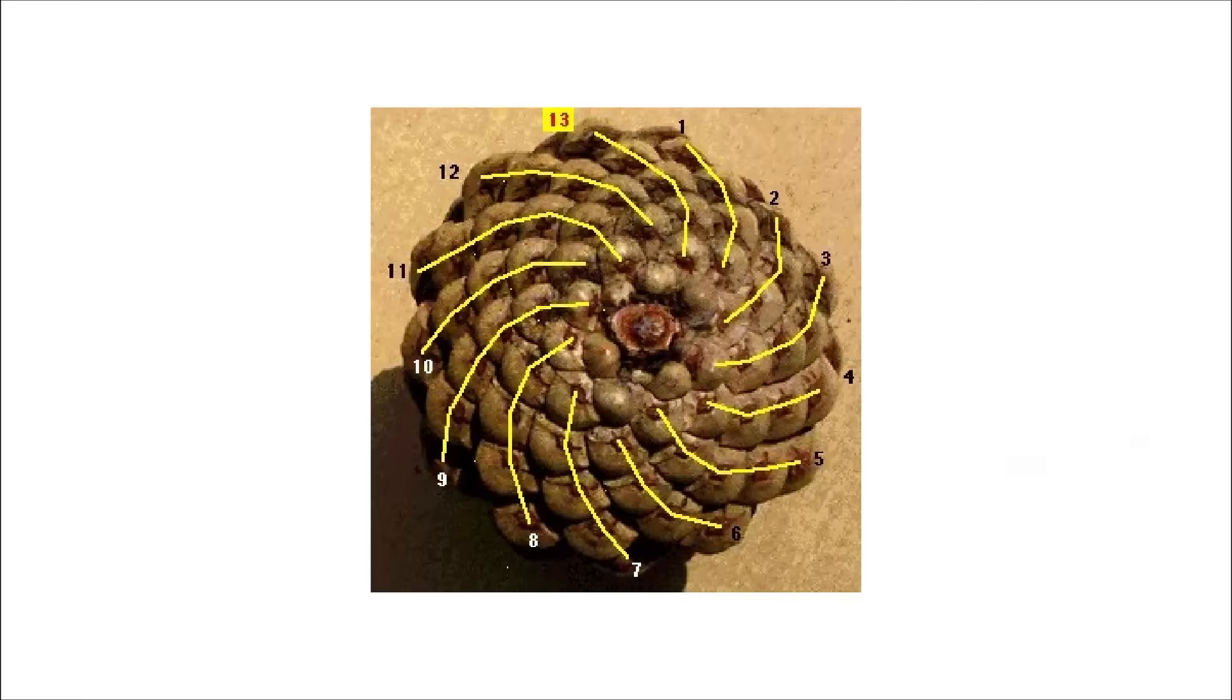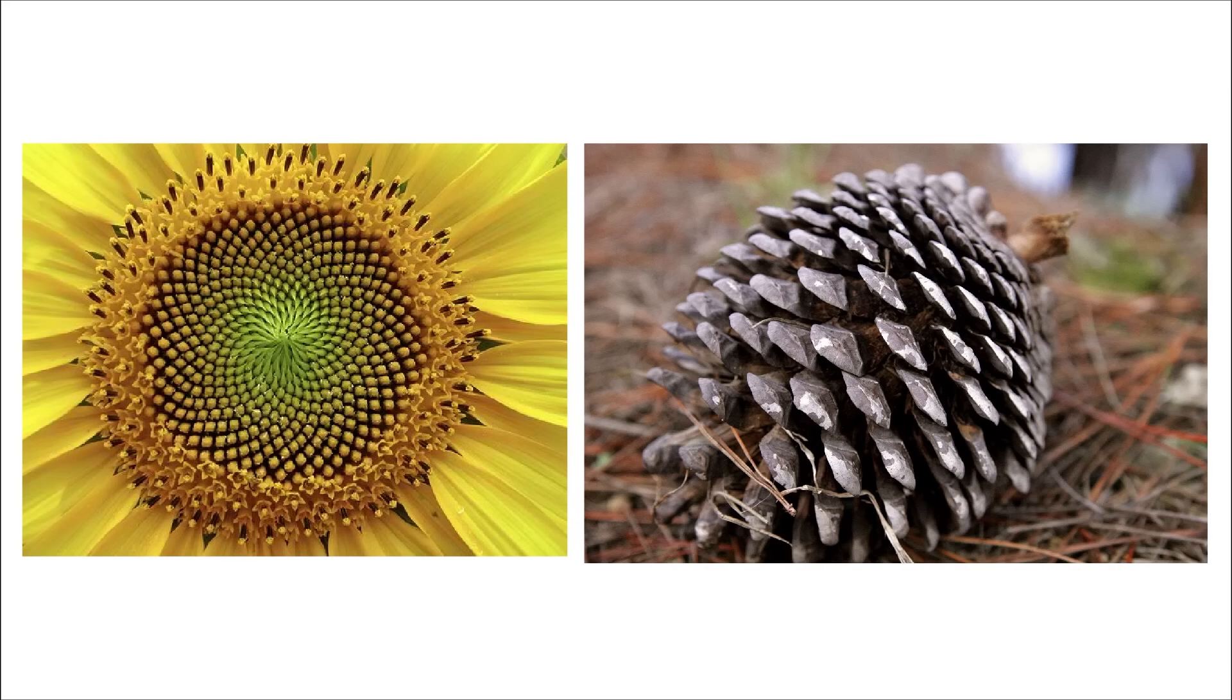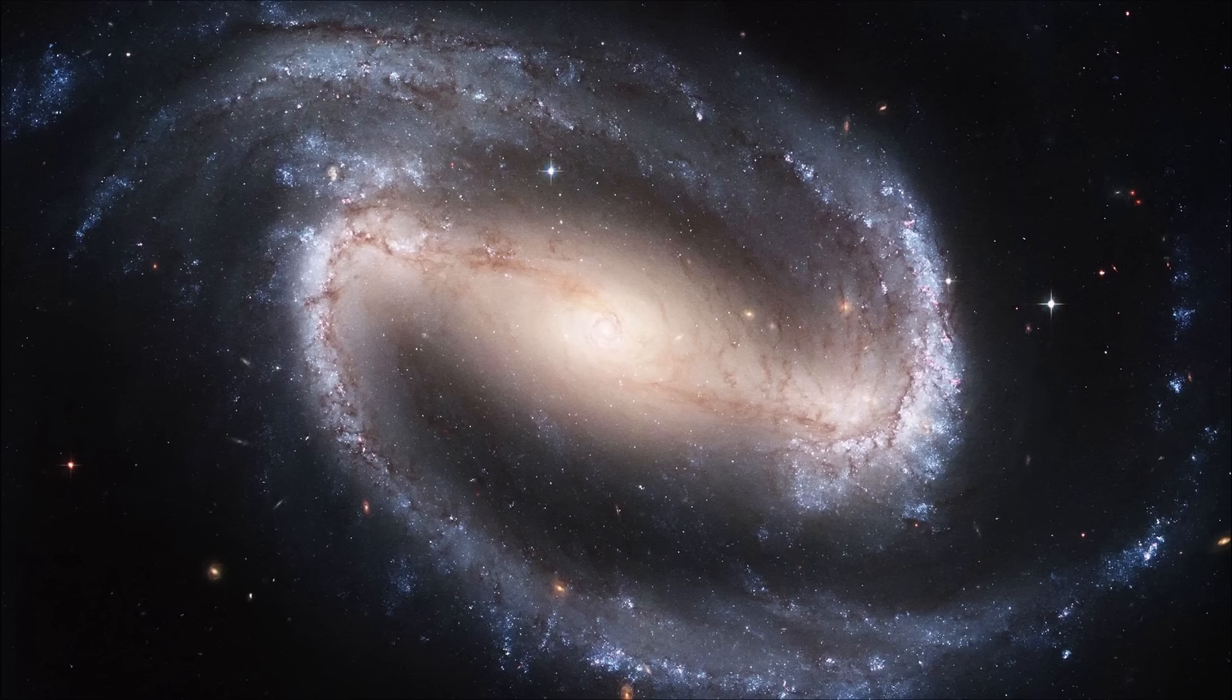This also happens with sunflowers, pine cones, and many plants in nature. In many cases, such as the pine cones and sunflowers, it flows in a double spiral or more, much like the spiraling arms of a galaxy. From the microcosm to the macrocosm, spirals are always present.